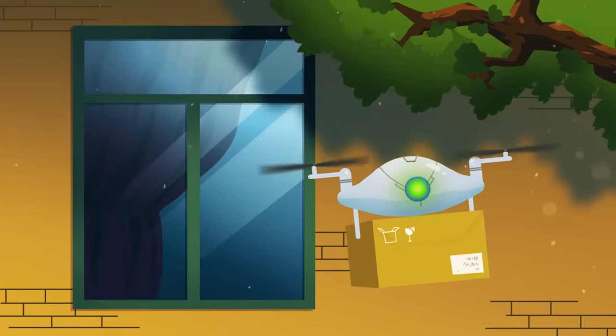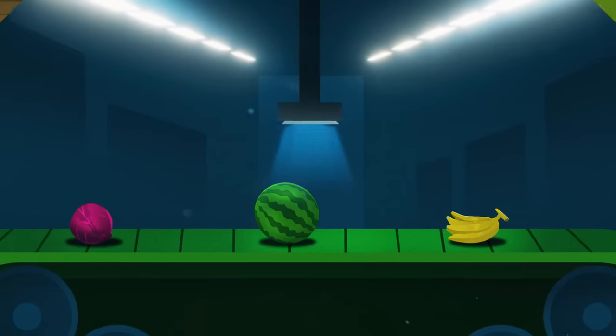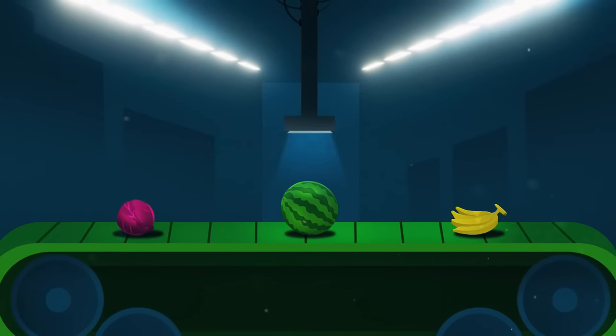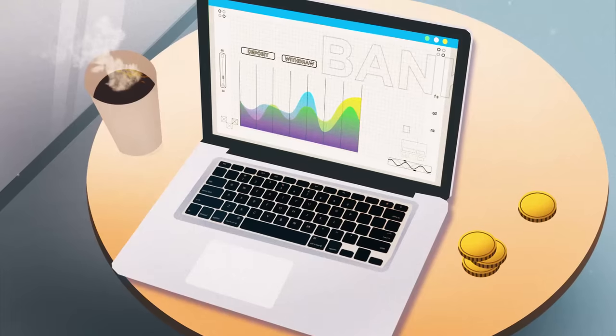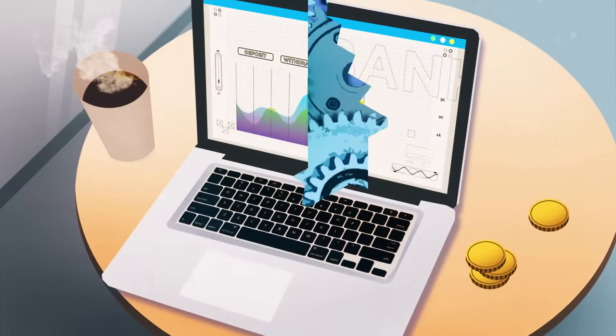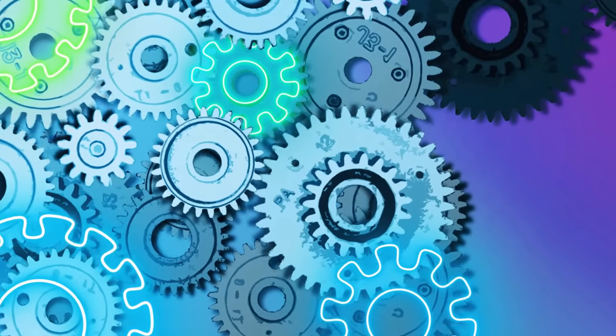Drones deliver packages to your doorstep. Autonomous clerks scan your groceries and handle your money at the bank. The world is dominated by more machinery than ever, but we've only scratched the surface.